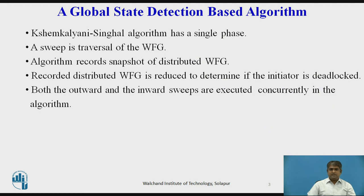In the outward sweep, the algorithm records a snapshot of a distributed WFG. In the inward sweep, the recorded distributed wait-for-graph is reduced to determine if the initiator is deadlocked. Both the outward and inward sweeps are executed concurrently. Complications arise because the two sweeps can overlap in time at a process — that is, the reduction of the wait-for-graph at a process can begin before it has been completely recorded.